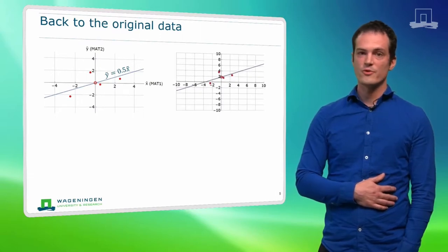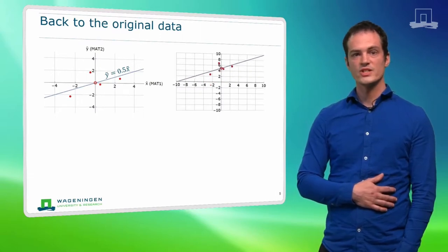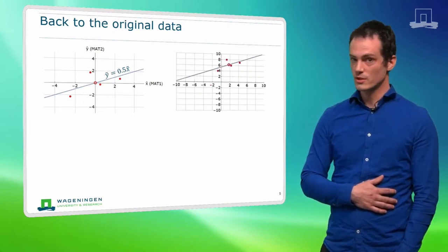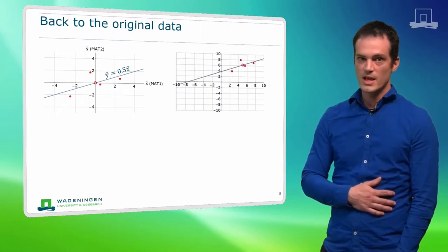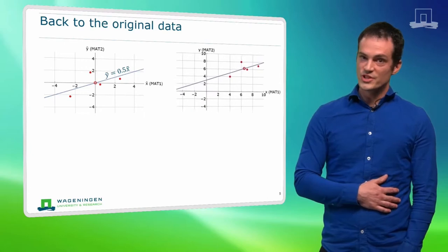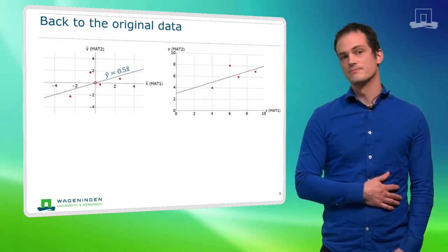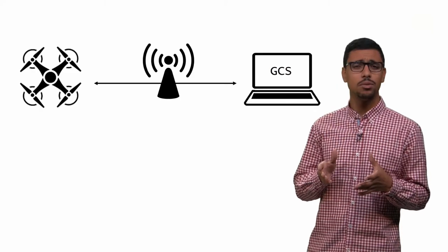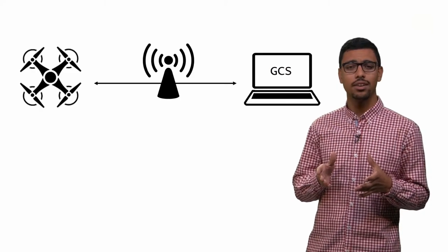If we need the formula of the regression line to the original observations, we need to shift the line back to its original position. Let's see what this looks like.